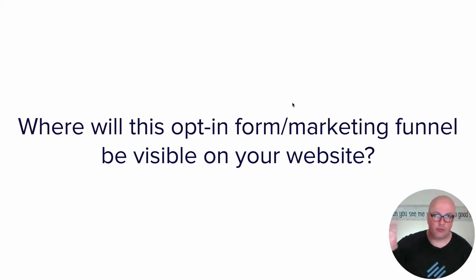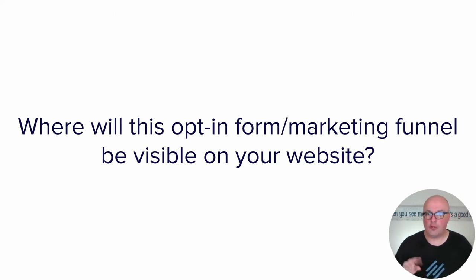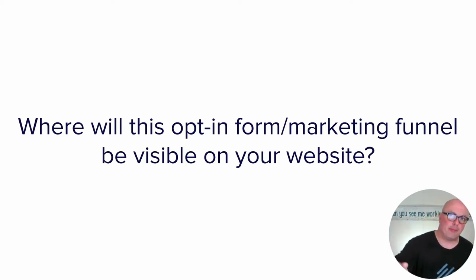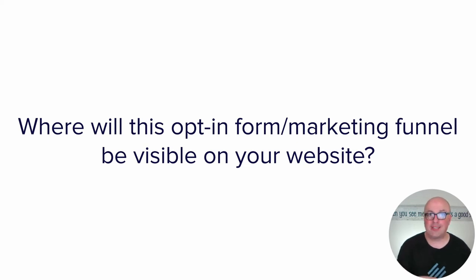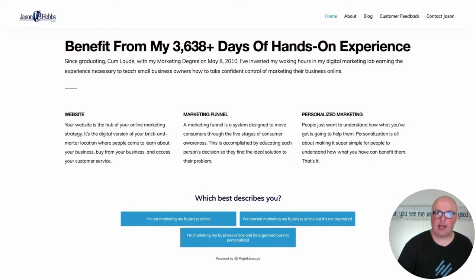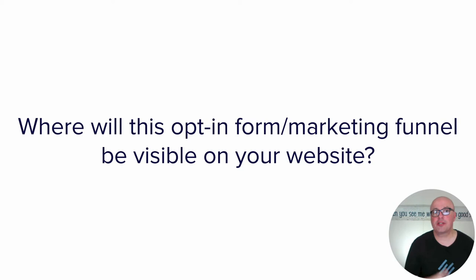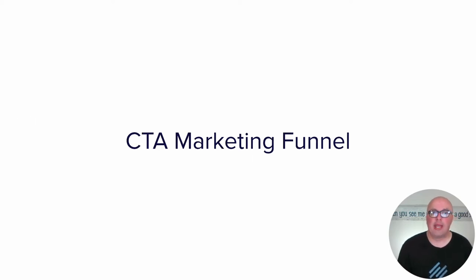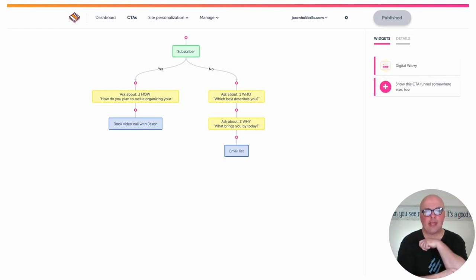Once you've figured out your two offers and your two questions, then you ask yourself: where will the form show up on your website? RightMessage offers five different ways: a full-screen takeover, a pop-up, a bar across the top, a toaster that shows up in the bottom right-hand corner, or an embedded widget where you actually embed it in a widget area, sidebar, or wherever. That's what I'm using for my website. That is an embedded widget that I've embedded into my homepage.